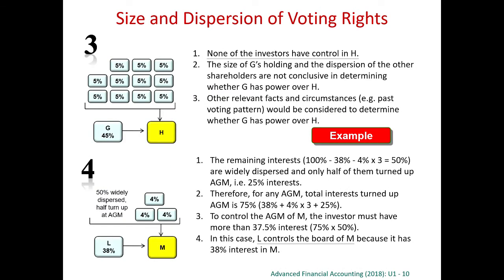In scenario 3, G has got 45% of H. 45% is not more than 50%, so we cannot say that G has the power. Considering the size and dispersions of the other shareholders, there are 11 shareholders, each with 5%. 5% is quite substantial, especially if this is a big company. If you have 5% of Hong Kong Bank, you will surely attend the AGM. Therefore, many of these shareholders may be involved in decision making, and G cannot always win — so G has no power.